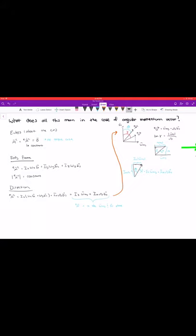So what does this mean in the case of the angular momentum vector? We have to use Euler's law again and take the moments about the center of mass. Our angular momentum is in the inertial frame, which does not change, but if we use the body frame, we can get more information.